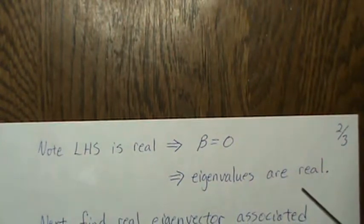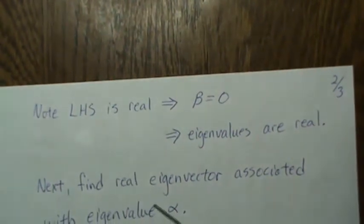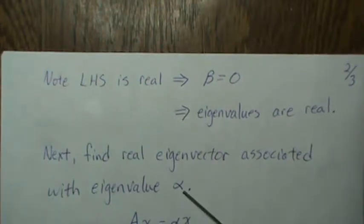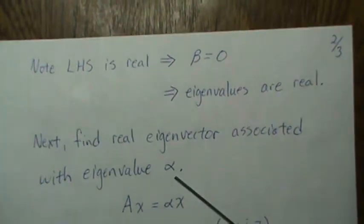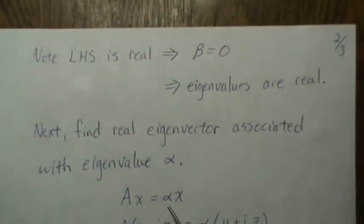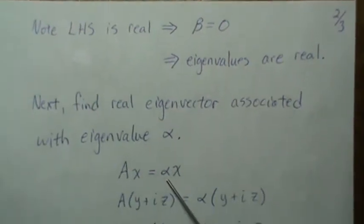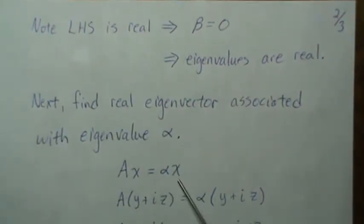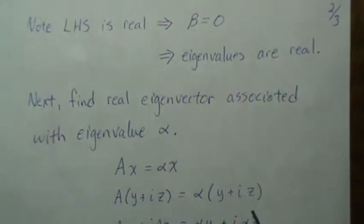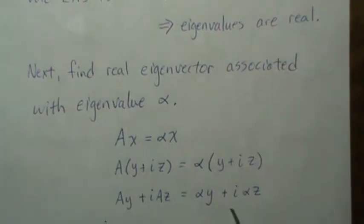So that's a quick little proof that the eigenvalues have to be real. Now let's find an eigenvector associated with the eigenvalue alpha. We just showed that alpha has to be real but this relationship still has to hold. Let's assume that the eigenvector is complex, so we get this relationship and then multiply through we get this.